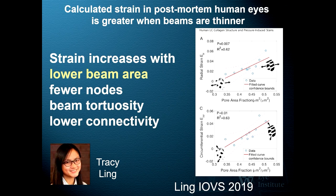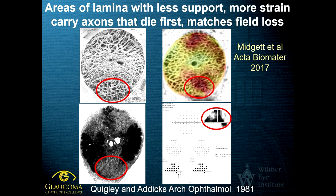Carolyn found that the beams of the lamina were narrower or thinner, and lower beam area — thinner beams — was shown by Tracy Ling in our group to indicate greater strain with the stress of intraocular pressure. The normal anatomy of the optic nerve head shows that connective tissues of the lower and upper poles are less dense; we now know they also strain more at the same intraocular pressure. The places with less connective tissue give more with intraocular pressure — these are the areas preferentially damaged in glaucoma, leading to the typical pattern of glaucoma damage.